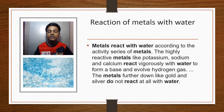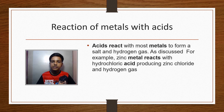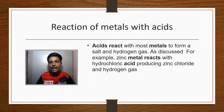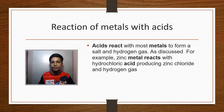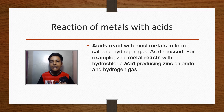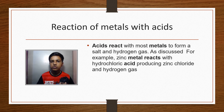Coming to the reaction of metals and non-metals with acids: I'll explain this through an activity. Take two test tubes — in test tube one, put a metal sample; in test tube two, put a non-metal sample. Then add five drops of hydrochloric acid to each test tube. Pass the gas produced from both test tubes through soap water so the gas comes out in the form of bubbles.